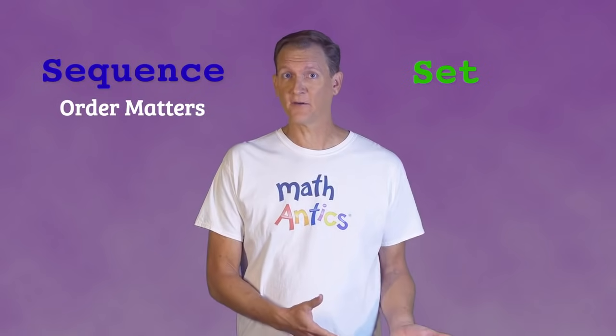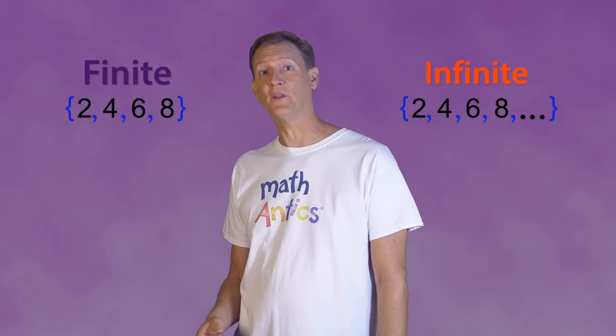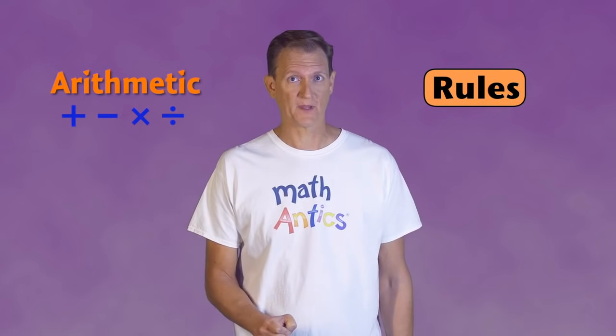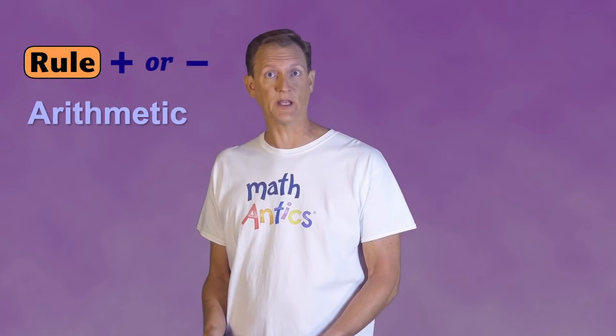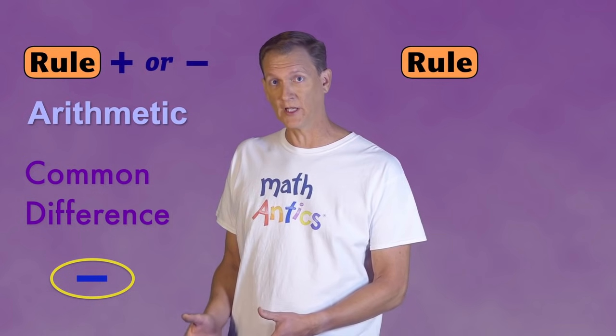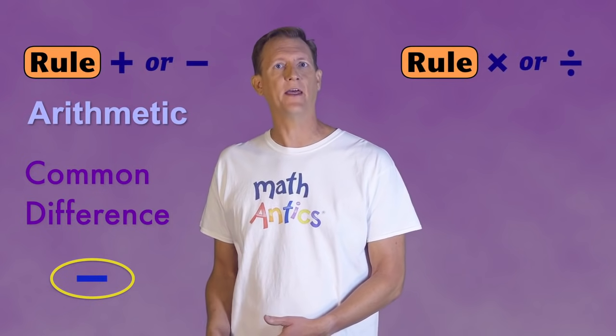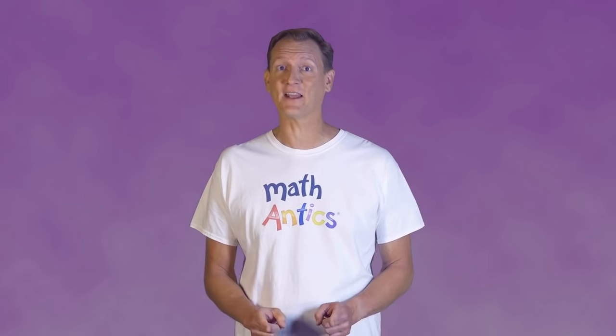So now you know a little bit about number sequences: the difference between a sequence and a set, that some sequences repeat while others don't, that some are finite while others are infinite, and that sequences can be based on arithmetic rules. If a sequence's rule involves adding or subtracting a constant amount, you have an arithmetic sequence and can find the common difference by subtracting adjacent numbers. If the rule involves multiplying or dividing by the same factor, you have a geometric sequence and can identify its common ratio by dividing adjacent numbers. Thanks for watching Math Antics and I'll see you next time!